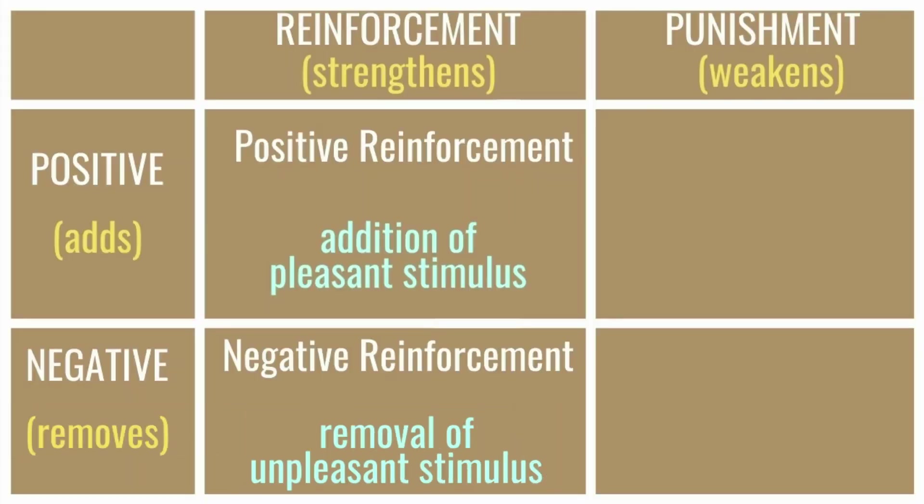There is another kind of reinforcement: negative reinforcement. Negative reinforcement strengthens the response by reducing, removing, or helping escape or avoid an unpleasant stimulus. For example, when I don't do my homework my mom nags me, but whenever I do my homework the nagging stops. The behaviour we want repeated is doing my homework, and the removal of the unpleasant stimulus — my mom nagging — is what reinforces it.